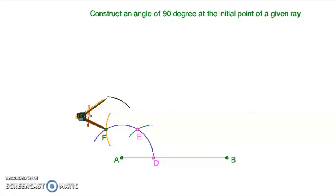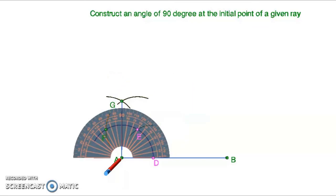We want to construct one bisector line. So measure more than half of EF. Draw arcs. Both the arcs intersect at point G. And using the scale, join GA.